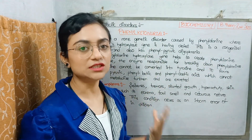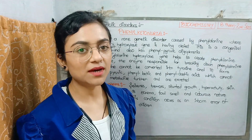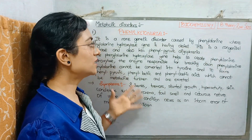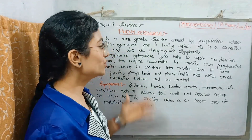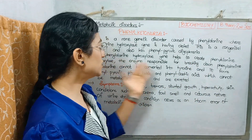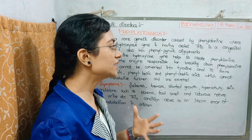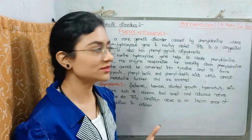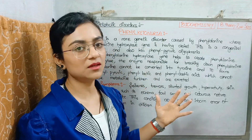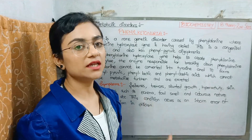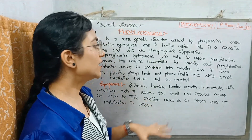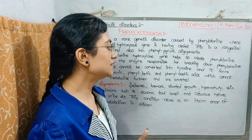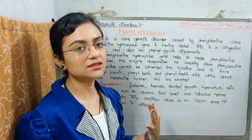The phenylalanine hydroxylase gene is defected — it is the gene that helps the phenylalanine hydroxylase enzyme function. This is a congenital disease, also called phenylpyruvic oligophrenia. Because phenylalanine can't break down into tyrosine, it gets converted to phenylpyruvic acid, phenyllactic acid, and phenylacetic acid, which don't get further metabolized and are excreted.